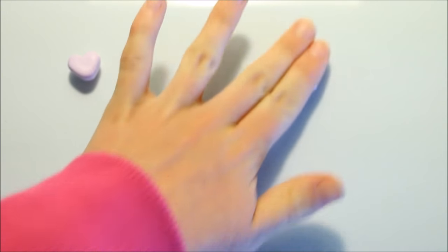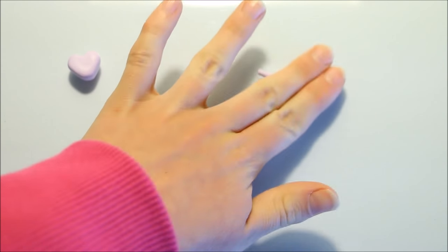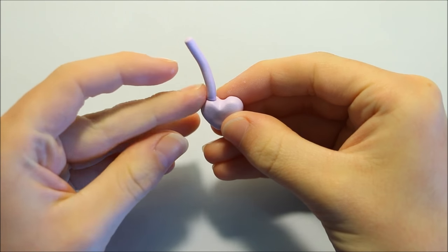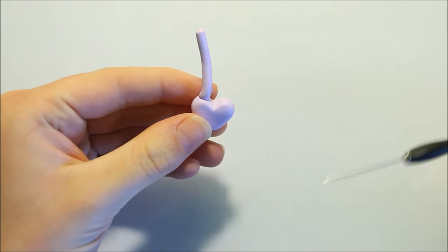Once happy with the shape, take some more clay and roll it into a snake, then just trim off the ends to make it the right size and blend both ends onto either side of the heart.